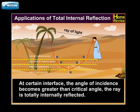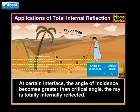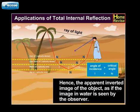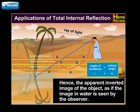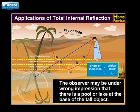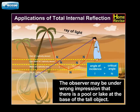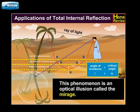At a certain interface, the angle of incidence becomes greater than the critical angle. The ray is totally internally reflected. Hence, the apparent inverted image of the object appears as if it is an image in water when seen by the observer. The observer may be under the wrong impression that there is a pool or lake at the base of the tall object. This phenomenon is an optical illusion called a Mirage.